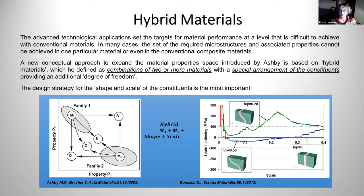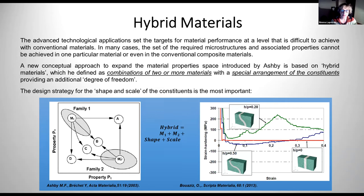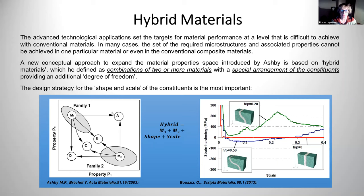A new conceptual approach to expand the material property space was introduced by Ashby through his hybrid materials, which he defined as a combination of two or more materials with a specific arrangement of constituents providing an additional degree of freedom. If we combine family M1 with some properties with family M2 using different architecture parameters — shape and scale — we can get out of the average properties towards a new space with higher properties than either M1 or M2.